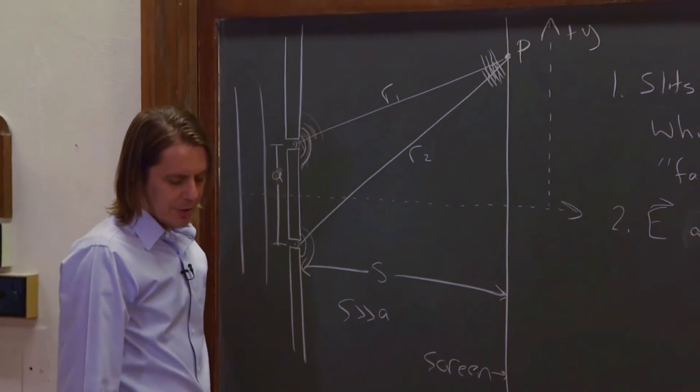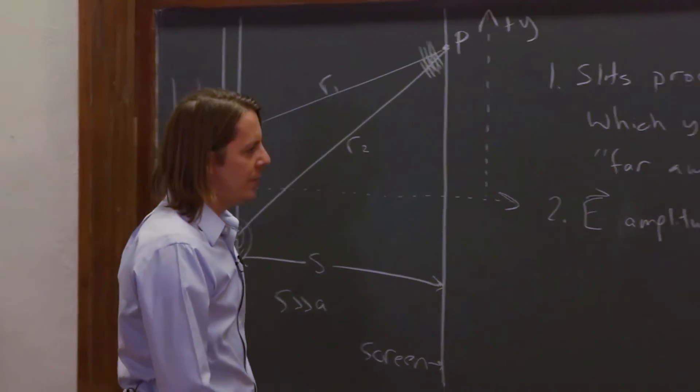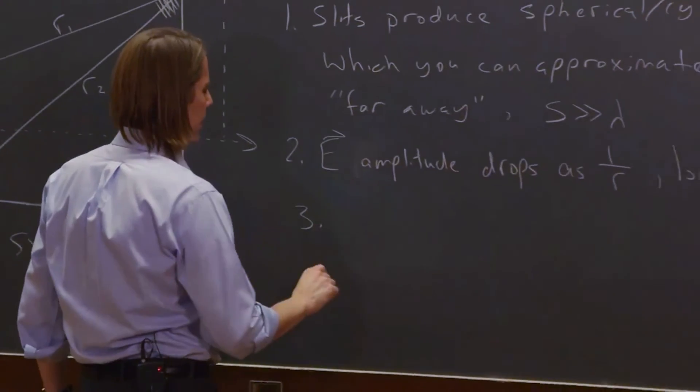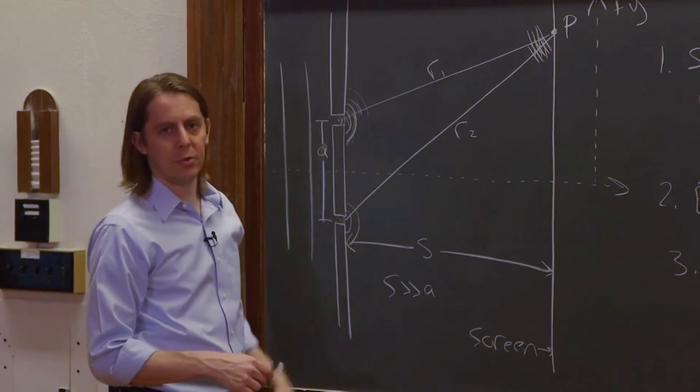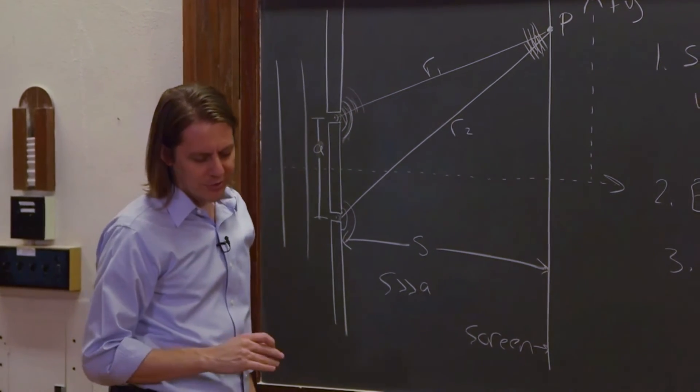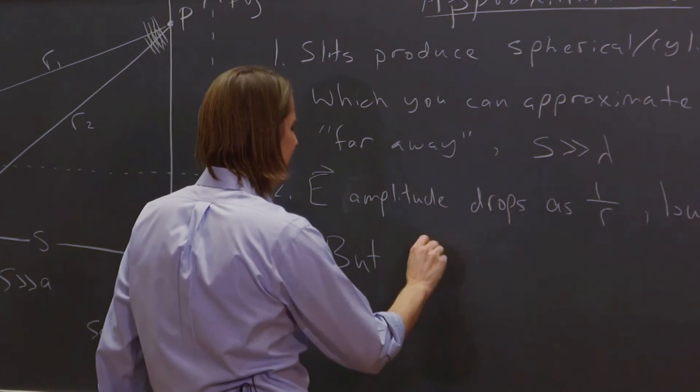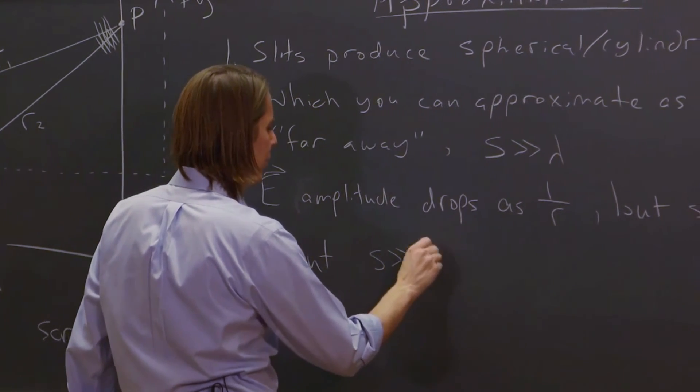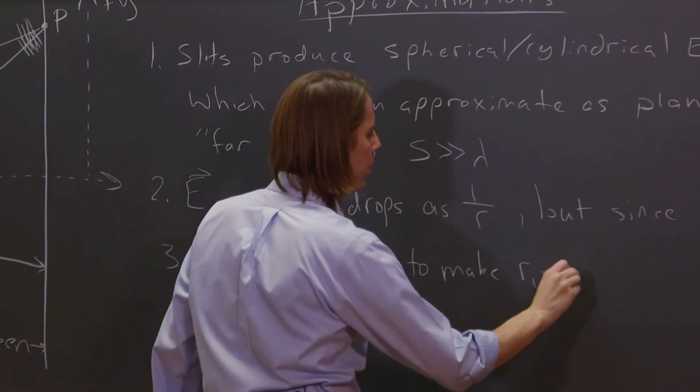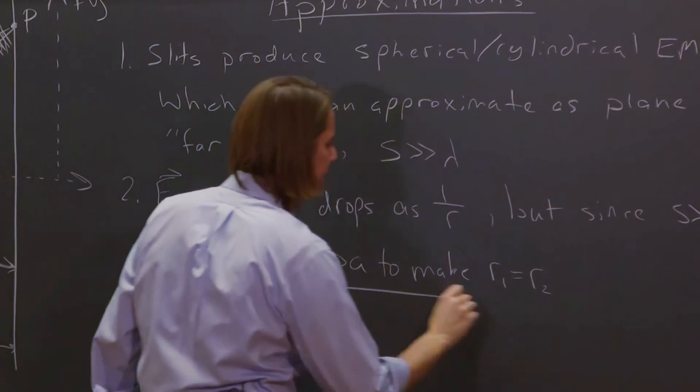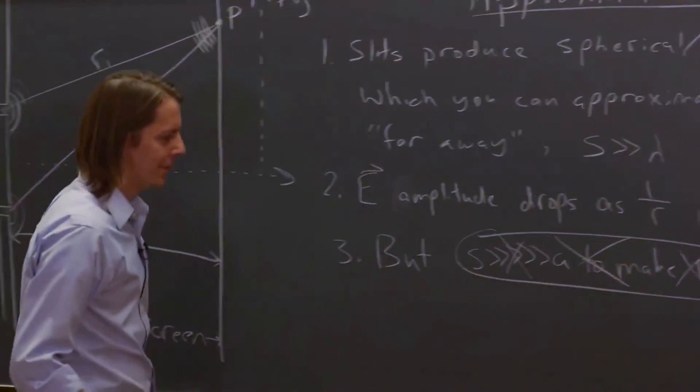So we're adding them up there, we're going to give them the same amplitude. Now you might go crazy and say if S is a lot bigger than A, then maybe R1 equals R2. But you don't want to say that. But S is not so much greater than A to make R1 equal R2. You don't want that. This is not true.